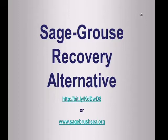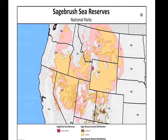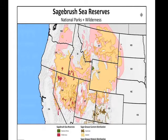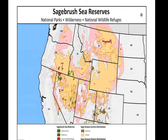Before turning it over to my colleagues, allow me to address the need for sagebrush reserves for sage-grouse—the second factor key to successful planning. The sagebrush sea is among the least protected landscapes in the American West. There are a couple of national parks of minor importance to sage-grouse, some designated wilderness areas—though most are grazed—and some national wildlife refuges, including Sheldon and Hart Mountain National Wildlife Refuges in Nevada and Oregon, which are key sage-grouse reserves that ought to be expanded.